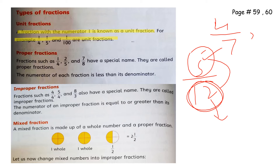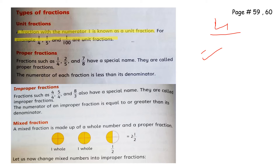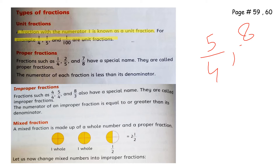If the numerator is greater than the denominator, that is called an improper fraction. For example, 5 by 4, 8 by 1, 2 by 3, 12 by 5 — when the numerator is greater than the denominator, the fraction is called an improper fraction.